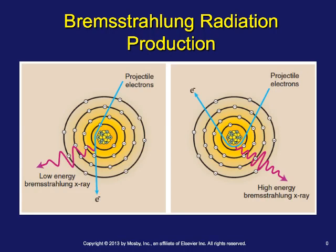Looking at figure 10-5, most of the energy produced is fairly low energy — most of the photons are low energy because most interactions occur further from the nucleus than close to it. It's just a geometrical reality. With a kVp setting of 60, the average energy we're receiving is around 20-something keV. So even though we really like Bremsstrahlung, most of these interactions are fairly low energy.